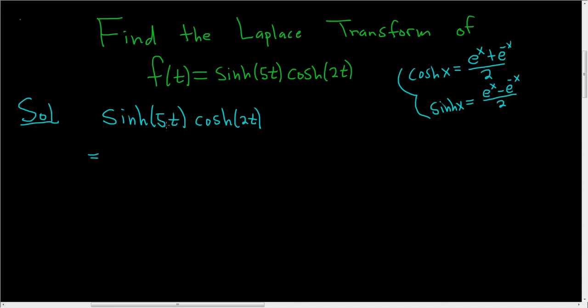So in this case, we're going to use the formulas or the definitions, rather, on sinh and cosh. So here it'll be e to the 5t. And it's sinh, so we have a minus. And then e to the negative 5t. And it's all being divided by 2. And then we have parentheses, times, and then we have cosh. This is e to the 2t. And then it's cosh, so it's plus e to the negative 2t, all divided by 2. We just got to be really careful.